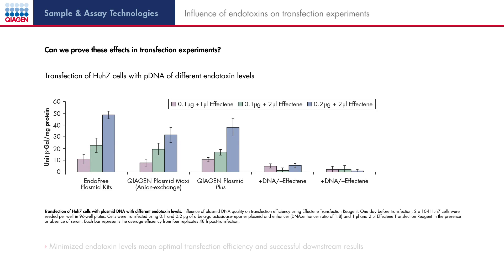To measure the efficiency of transfection, pCMV-beta including the beta-galactosidase gene was transfected into highly passaged human hepatoma cells. Beta-galactosidase activity was measured using the beta-gal assay. As shown in the figure, we can observe a correlation between different parameters: quality of DNA, amount of DNA, and amount of transfection reagent. The figure shows that endotoxin-free DNA gives the best result in different experiments, but the DNA amount and amount of transfection reagent also play a significant role. The optimal ratio must be calculated.